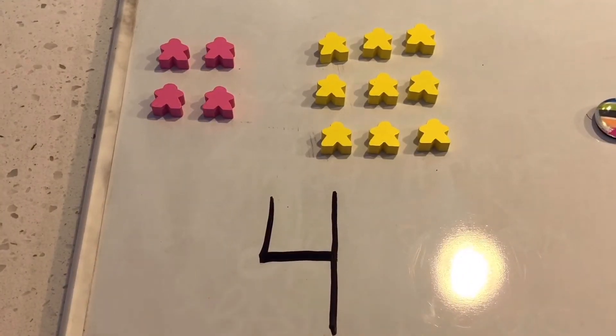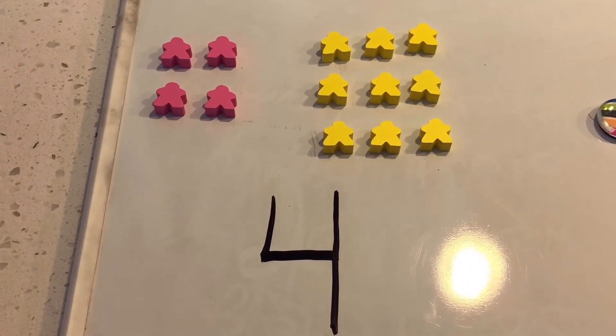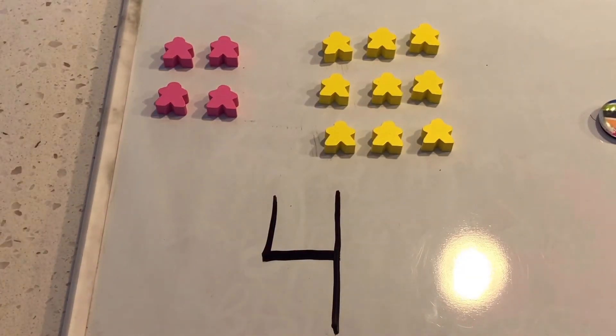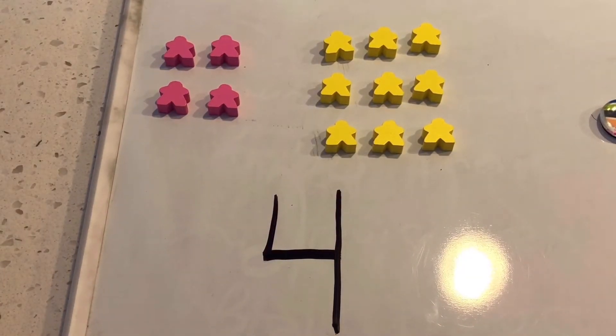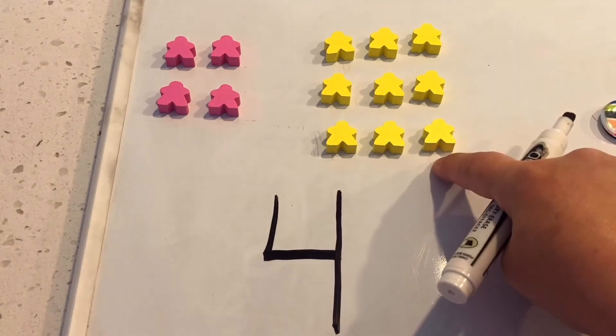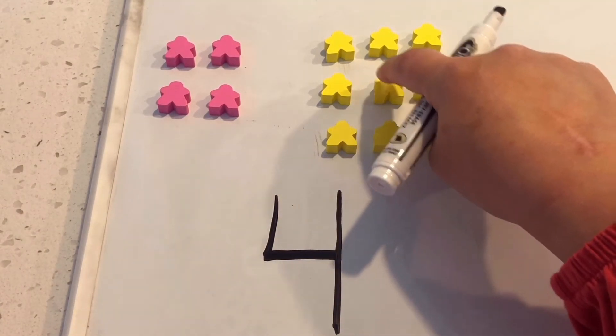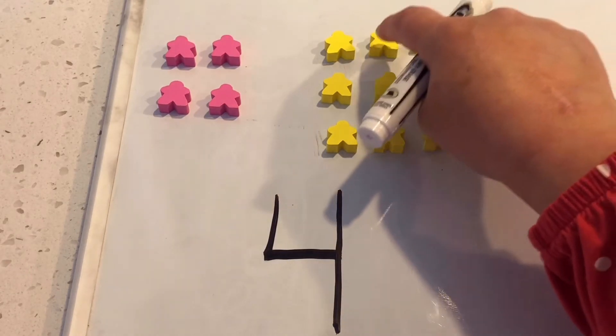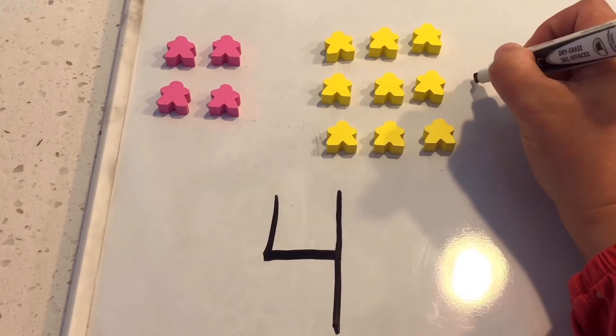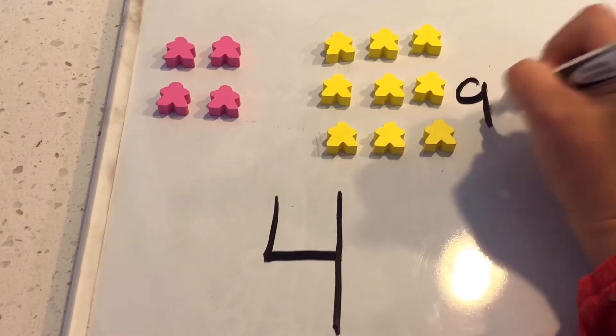What number is this? That's right, that's a 4. Which group has 4? 1, 2, 3, 4, 5, 6, 7, 8, 9. That's not 4. We know there are too many there.